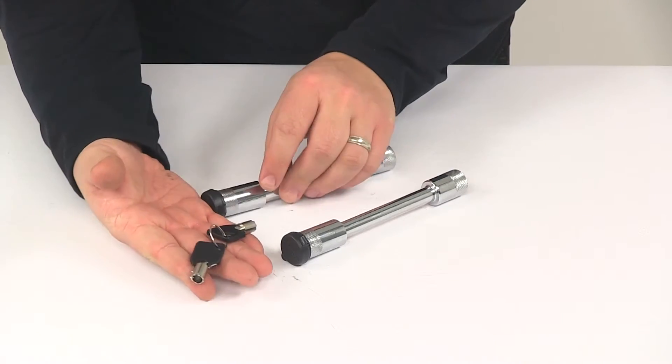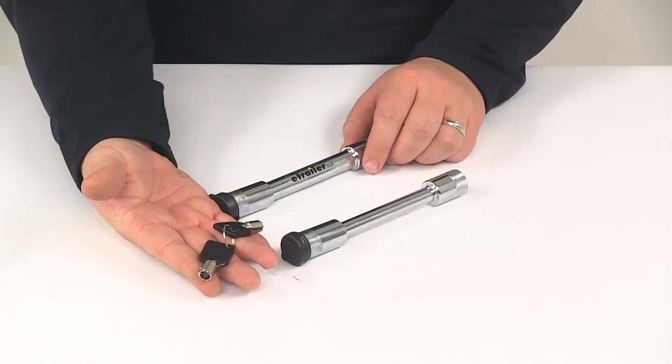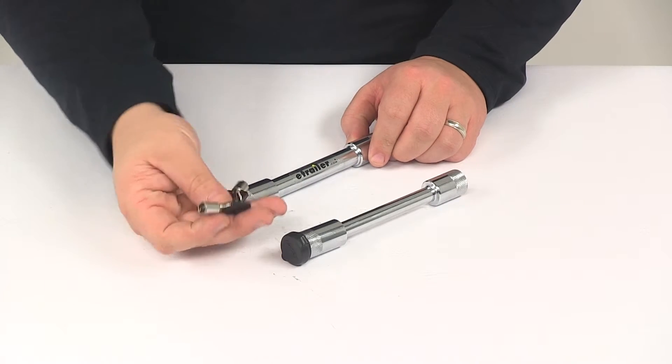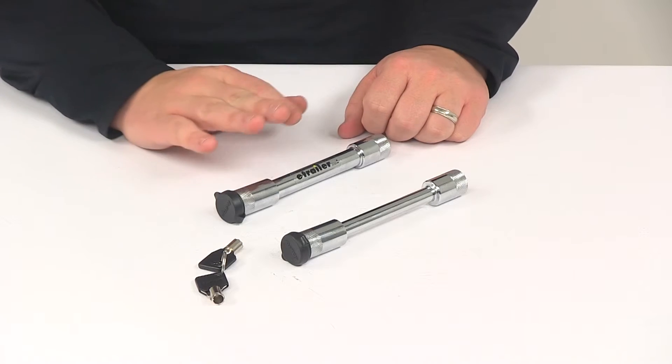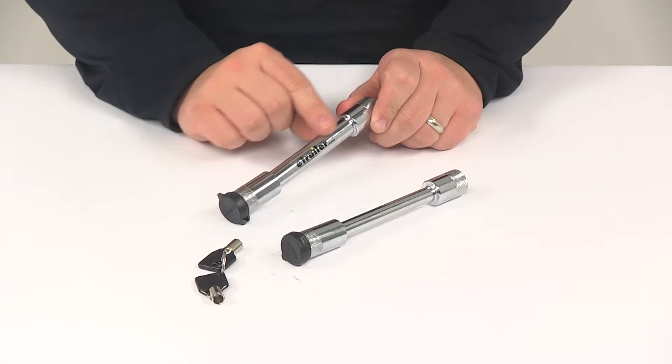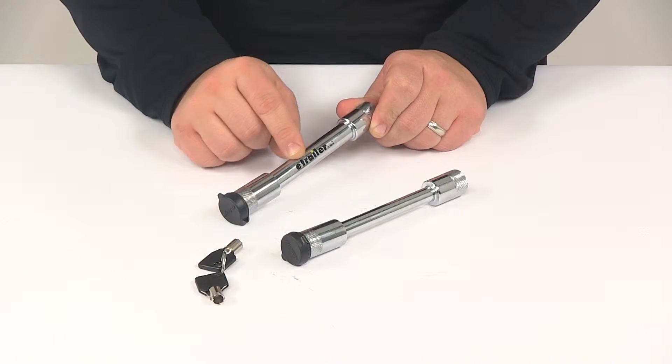The keys that it comes with, it's going to be two total and they're keyed alike. So any one of the keys will work on either one of the locks. Now when it comes to the hitch receiver lock, that's this one right here, the pin diameter on the unit is going to measure five-eighths of an inch in diameter.